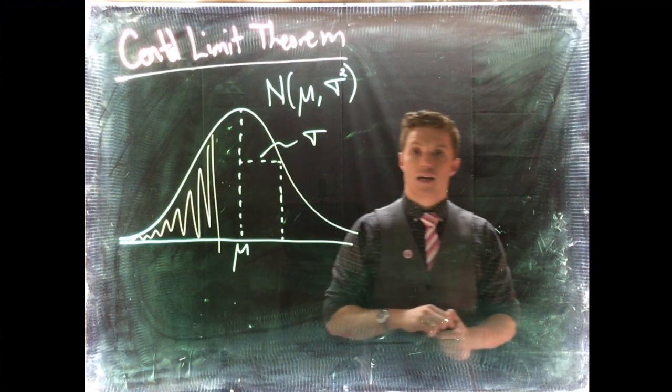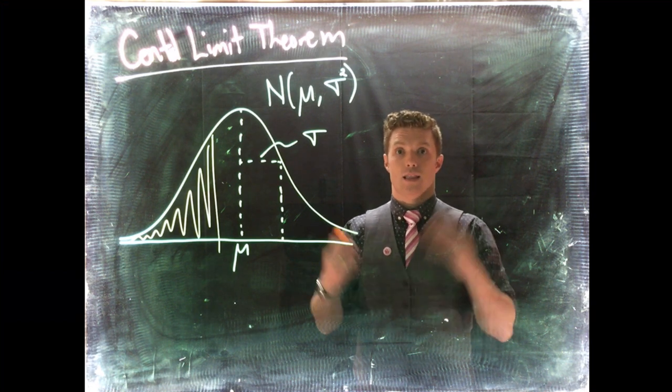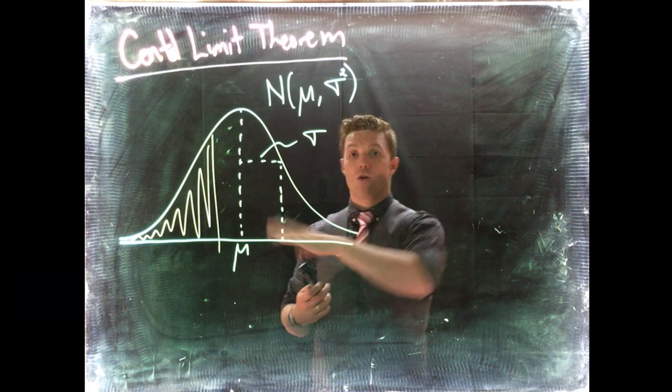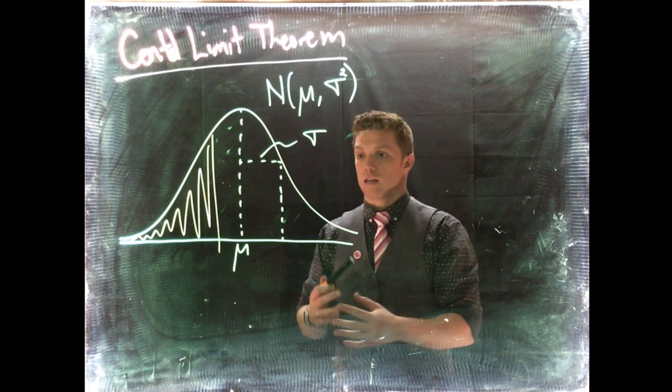What happens if instead of just taking a single observation, we talk about a sample size of like 10 or 20 where we take a lot of people and take their average? How is that distributed with respect to the original distribution and what goes on?